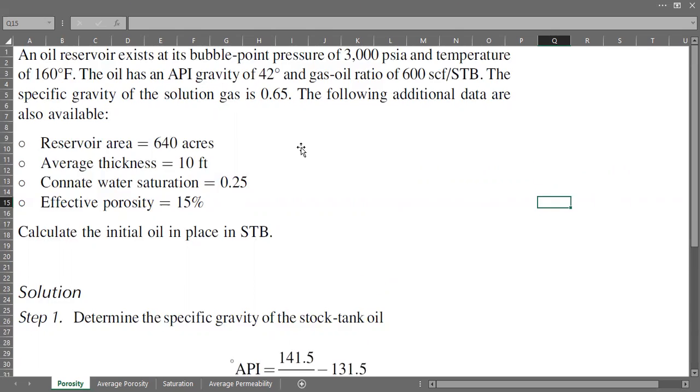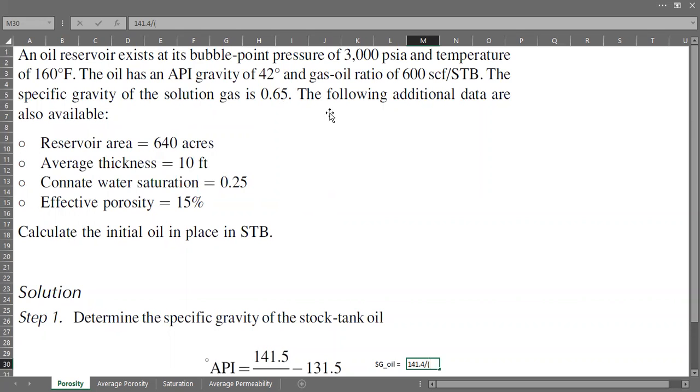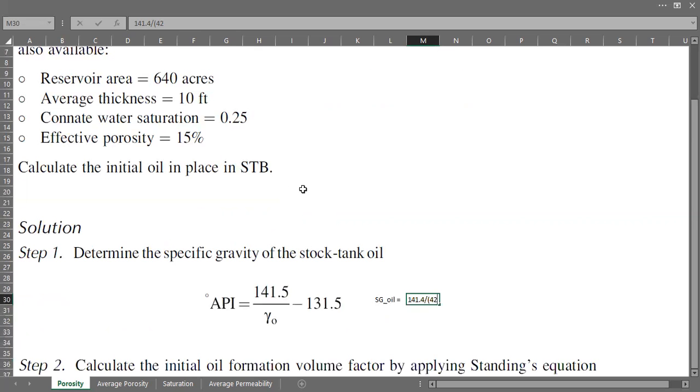We know that the API gravity is 42 degrees, so we can use this correlation to calculate the specific gravity. I will call it SG oil, specific gravity of the oil. If we rearrange the equation it will be 141.5 divided by 42, the API gravity, plus 131.5.